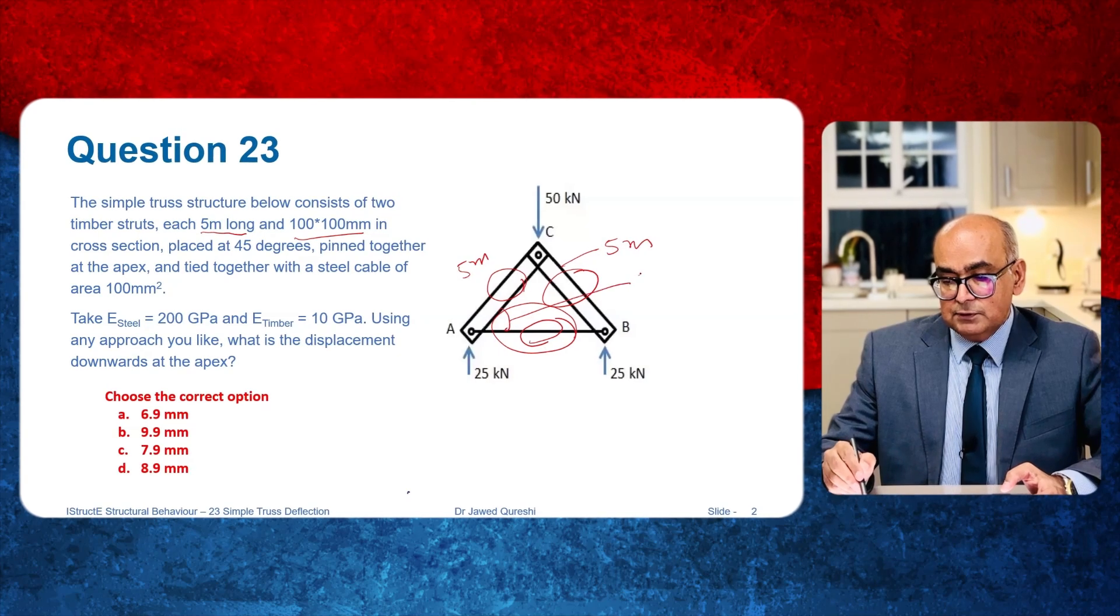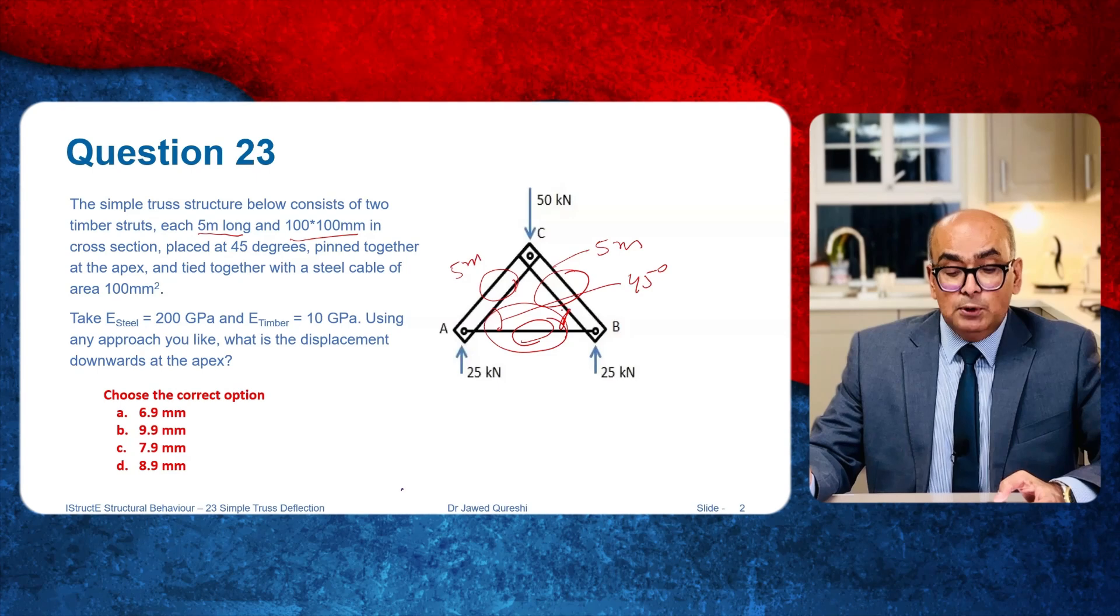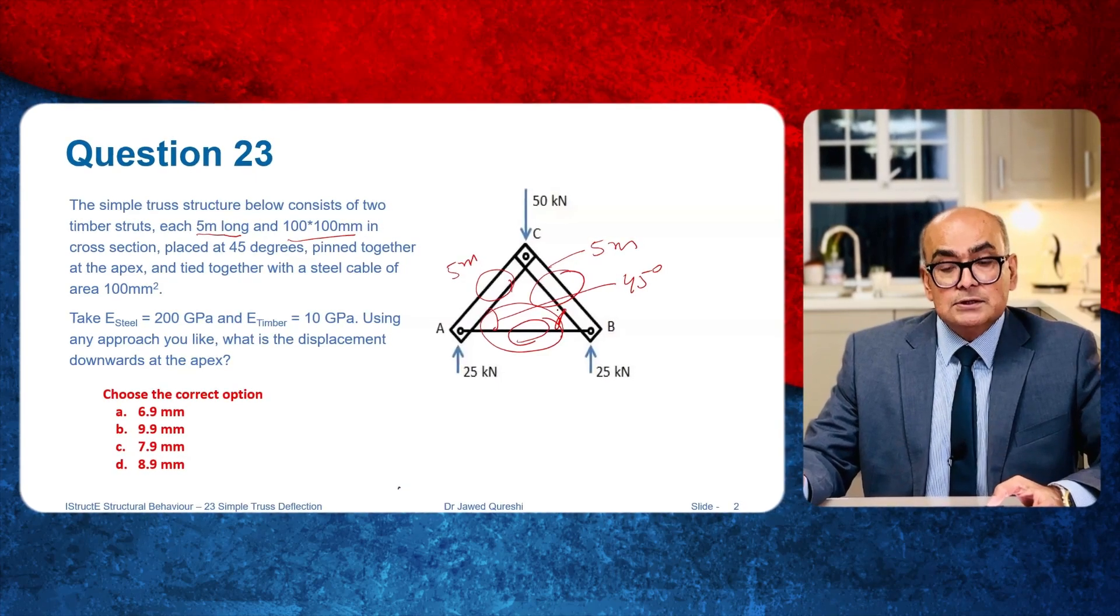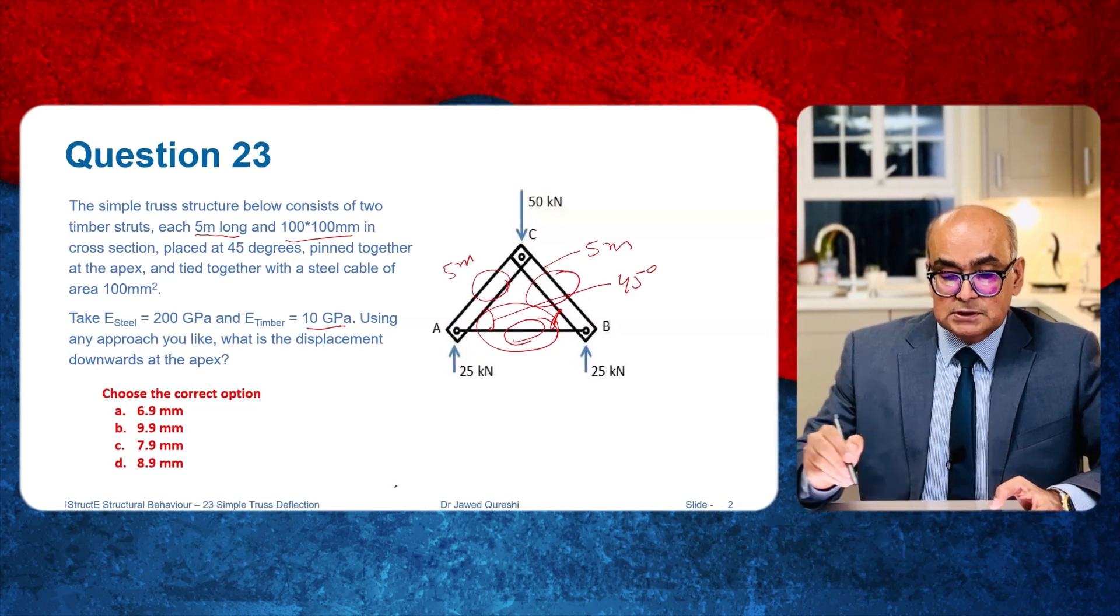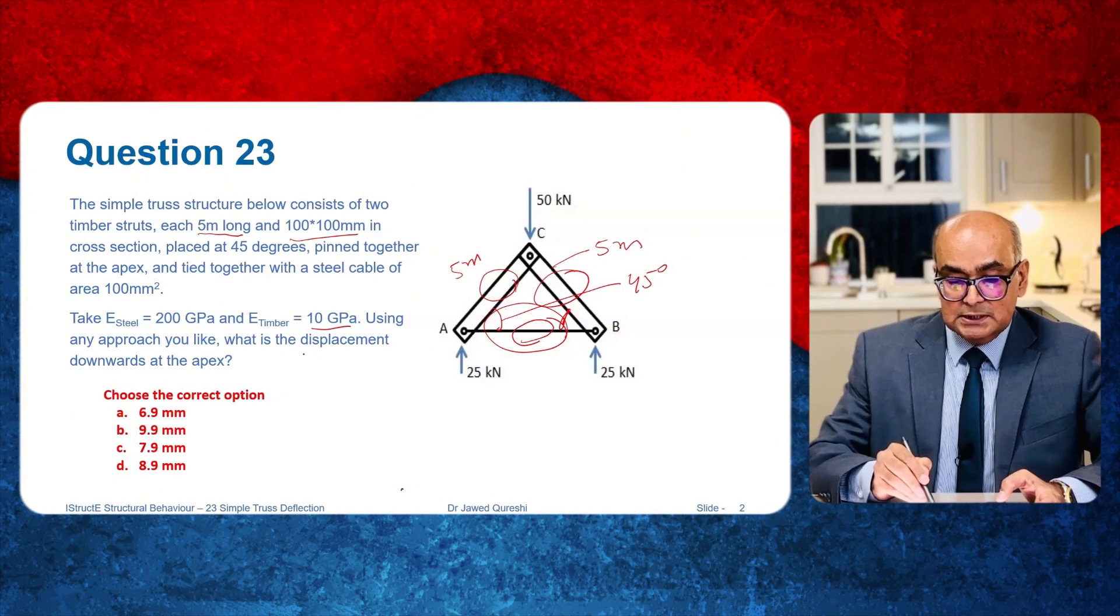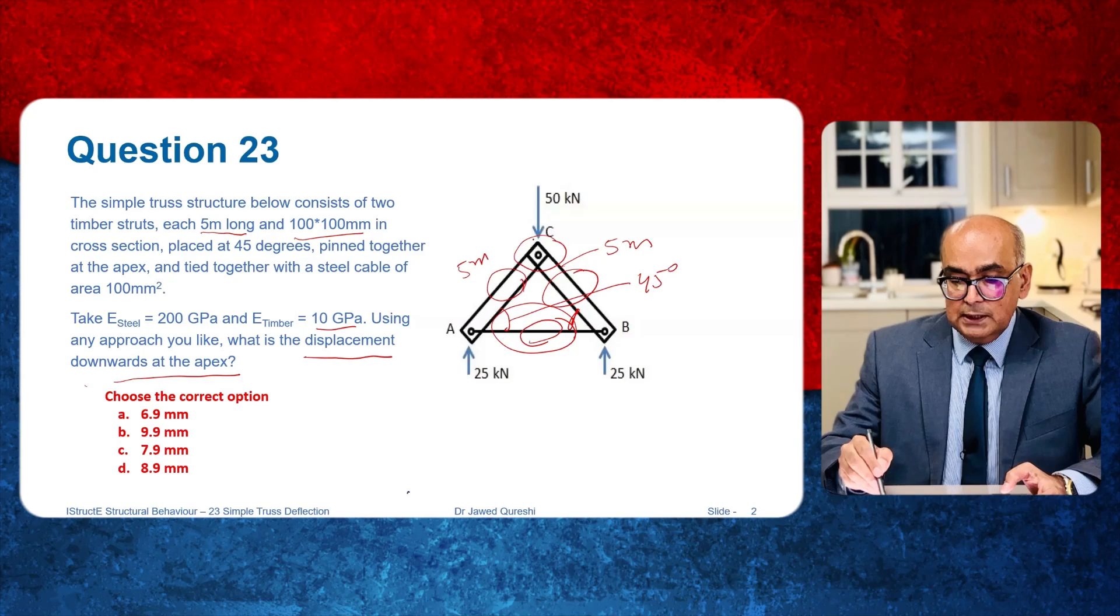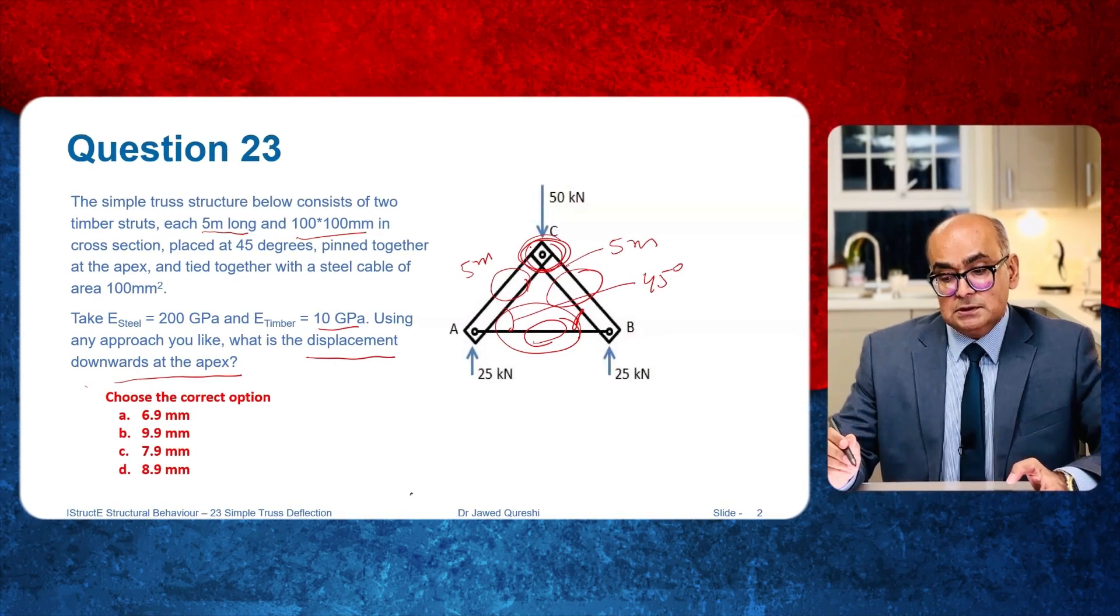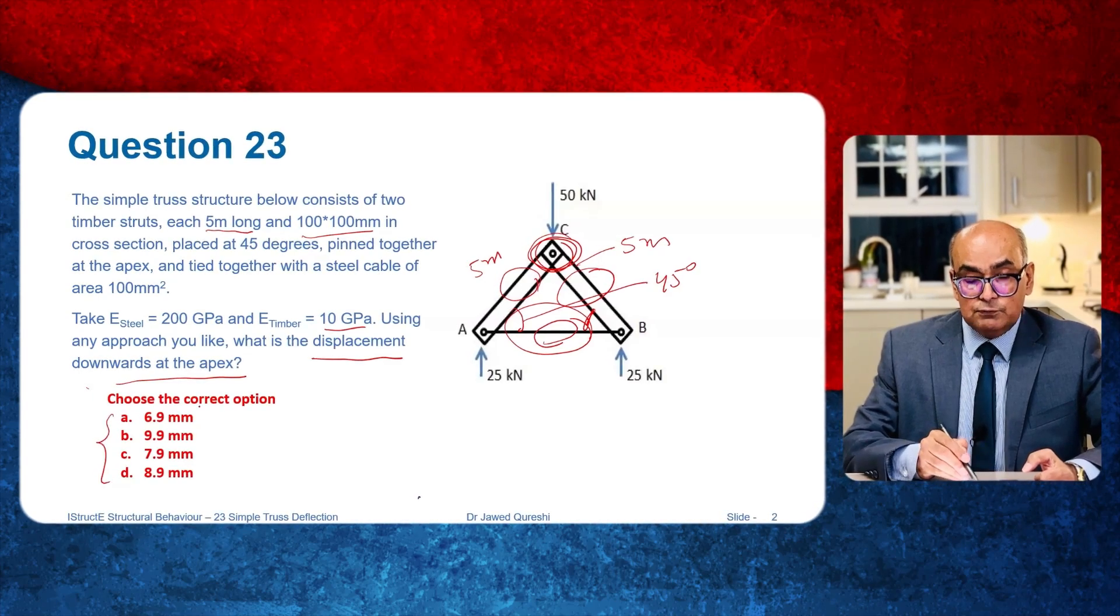The modulus of elasticity E is given 200 GPa and the timber modulus of elasticity is given which is 10 GPa. Using any approach we have to work out displacement of apex downward. So we have to work out how this truss is going to displace downwards. And there are four options to choose from.